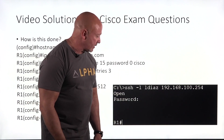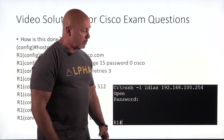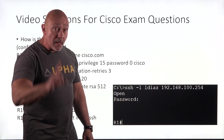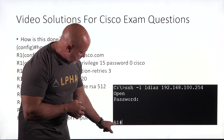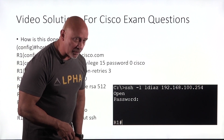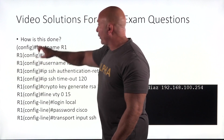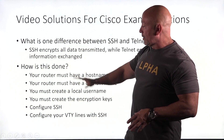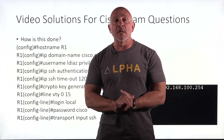So how do we SSH? There it is: ssh -l LDS, which means listing who — LDS — to the IP address. Then it's going to ask you for the password. Because I have privilege level 15, I'm in privilege mode — you can see the pound sign. So that's the difference: SSH encrypts, Telnet doesn't. That's your answer. See you in the next one.